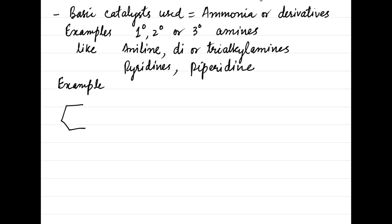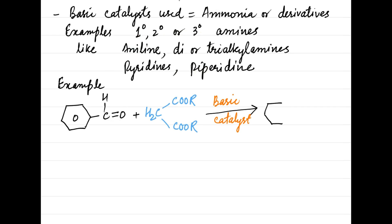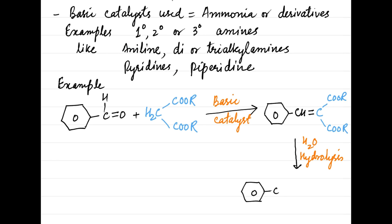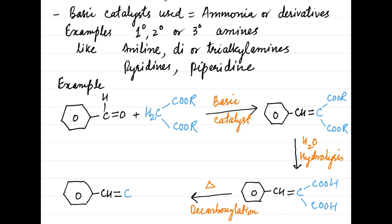As an example, consider the reaction between benzaldehyde and an active methylene compound. In the presence of a basic catalyst, these condense to form an alpha-beta unsaturated carbonyl compound with the loss of a water molecule. This is then subjected to hydrolysis so that ester groups are converted into carboxylic acids.